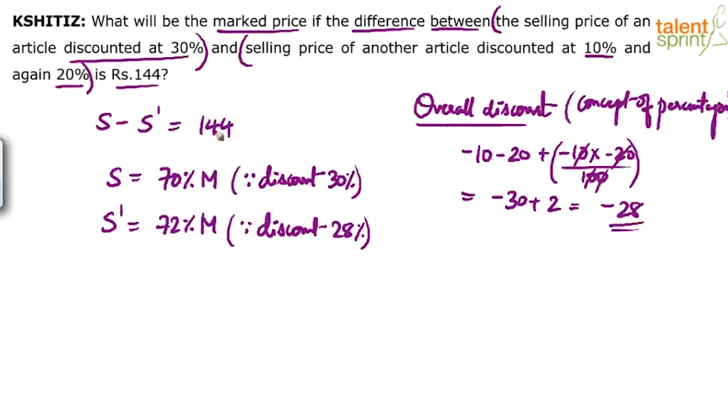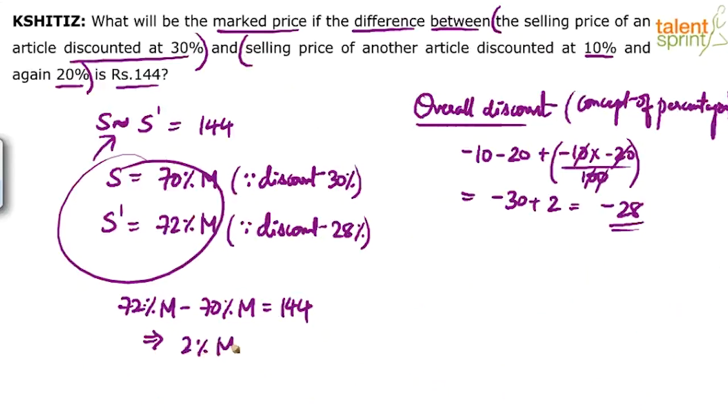Now he says the difference between these two is 144. So substitute S and S dash in this equation. Of course the difference here, it is not minus, it's difference. So can you say 72% of mark price minus 70% of mark price equals to 144. Which means 2% of mark price is 144.